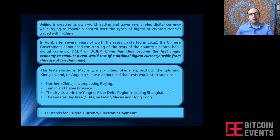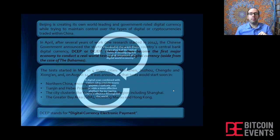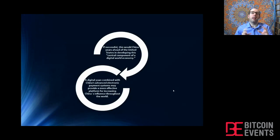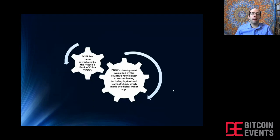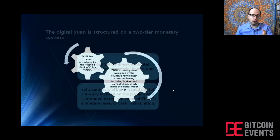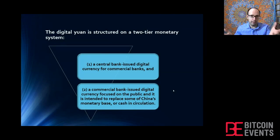China started to finally test the digital yuan last year in April and May, after six years of research. The digital yuan is also known as DCEP — digital currency electronic payment — or sometimes referred to as ERMB or ECNY. So digital yuan, DCEP, ERMB, or ECNY all refer to the same concept. DCEP has been introduced by the People's Bank of China, which is China's central bank, and it's going to operate through a two-tier monetary structure as already mentioned.